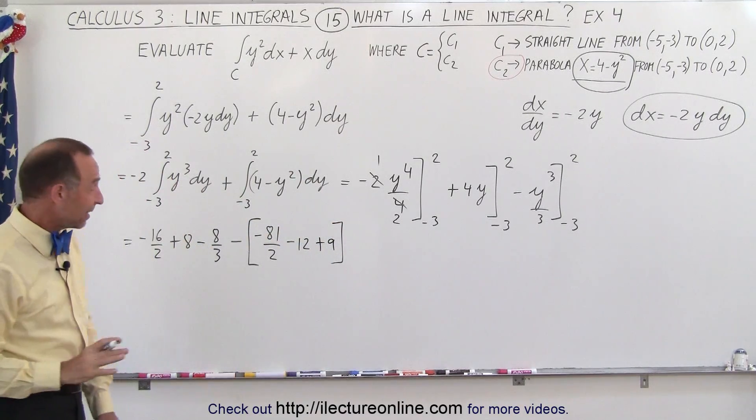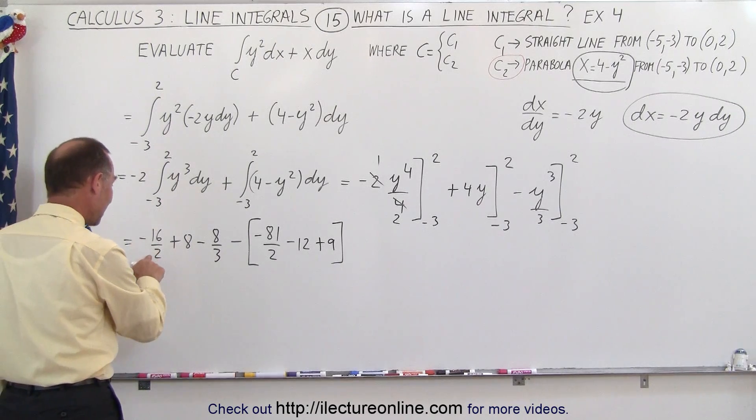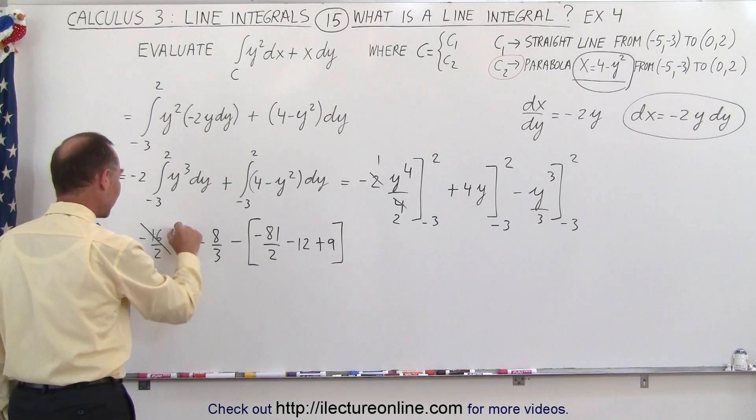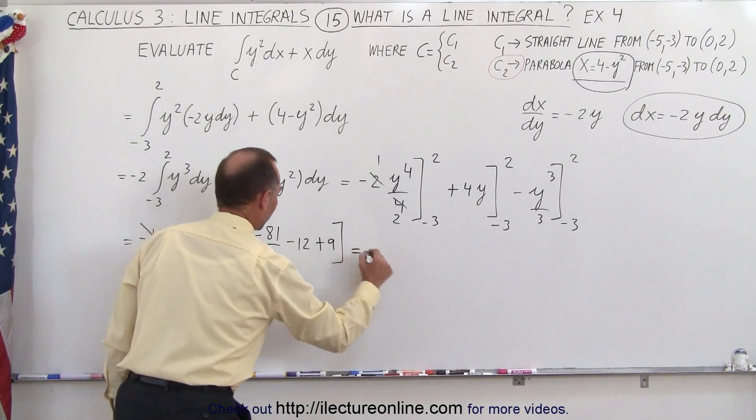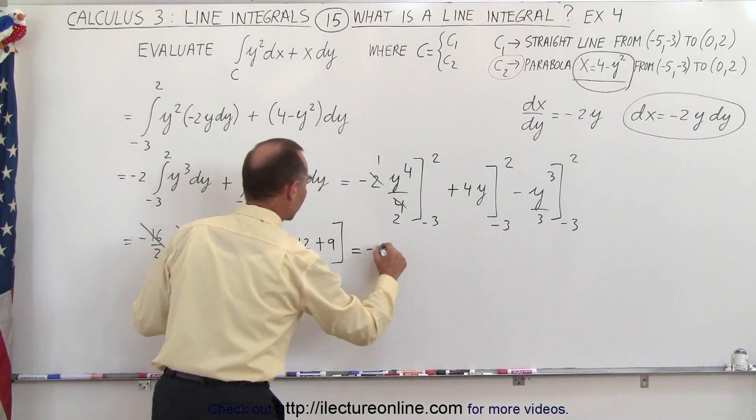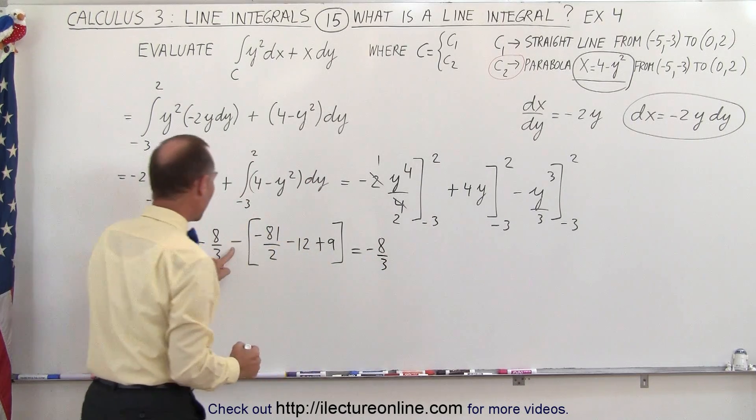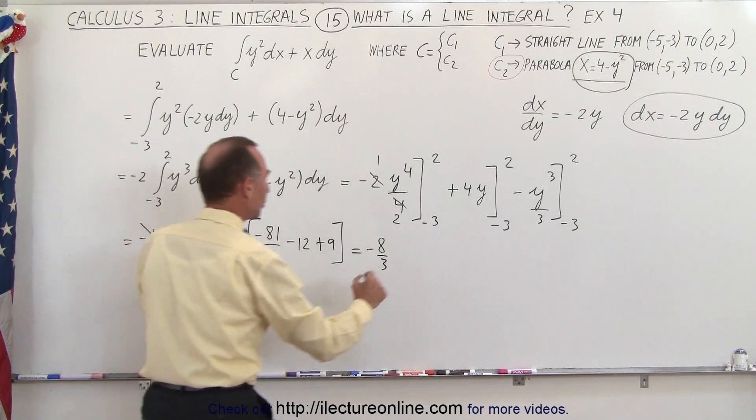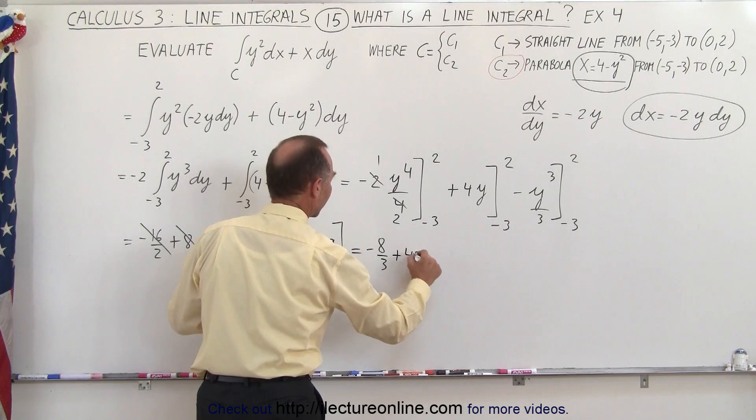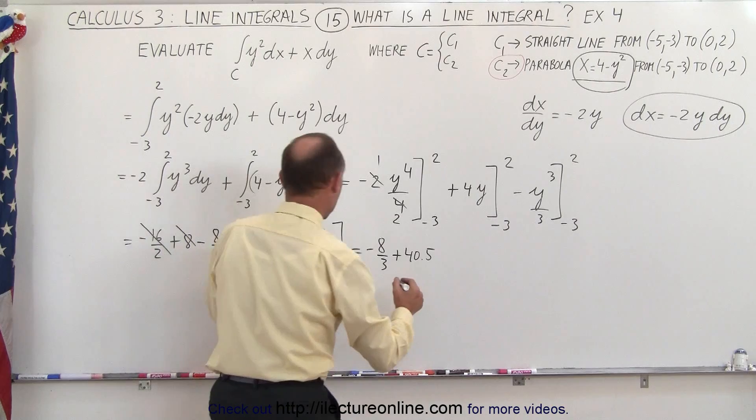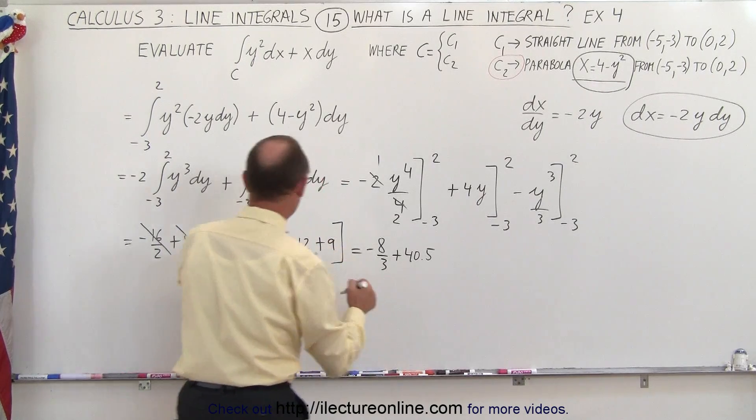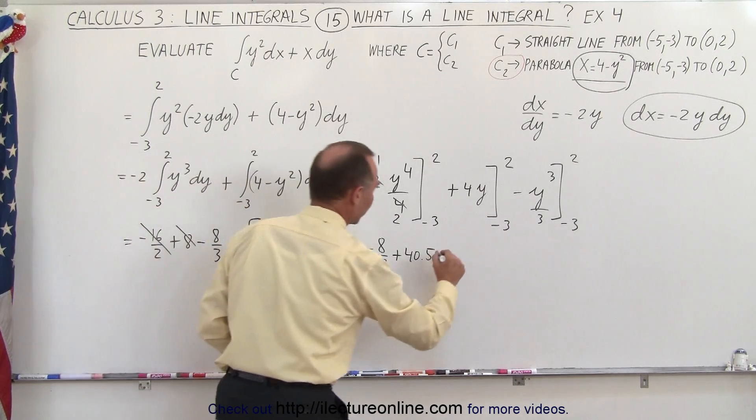Okay, simplifying, we have 8 minus 8 plus 8, so two terms cancel out. We have minus 8 thirds, plus 81 over 2 which is 40.5, then minus 12 plus 9 is minus 3, but there's a minus sign in front making it plus 3.